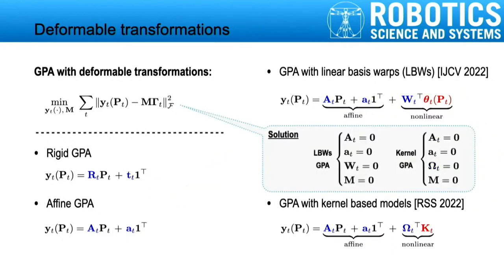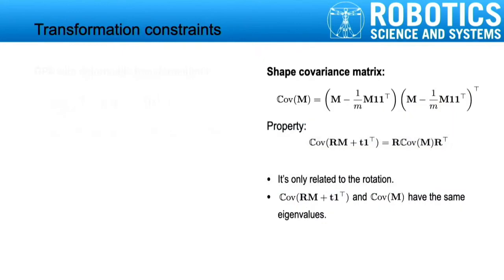For deformable transformations, we need to design transformation constraints. Otherwise, the solution will be trivially zero. To proceed, we introduce a concept called the shape covariance matrix. Specifically, the shape covariance matrix is only related to the rotation, and under rigid transformations, the eigenvalues of the shape covariance matrix are preserved.